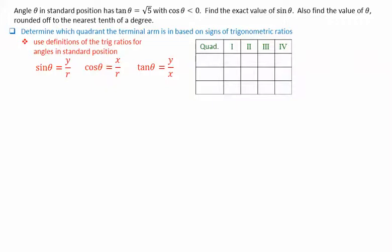Based on these definitions, sine theta will be positive in quadrants 1 and 2, whereas it will be negative in quadrants 3 and 4. Note this is because the y-coordinate is positive in quadrants 1 and 2, and negative in quadrants 3 and 4.